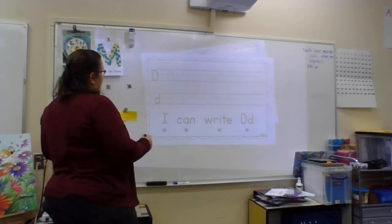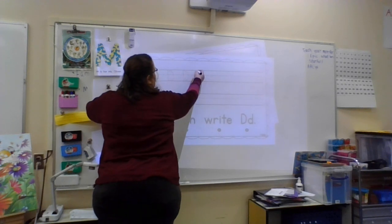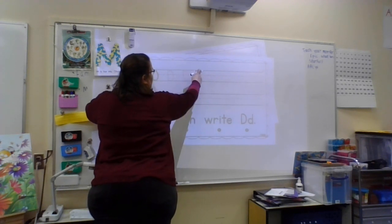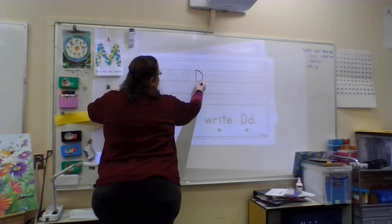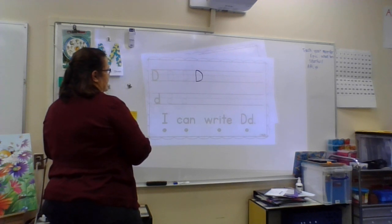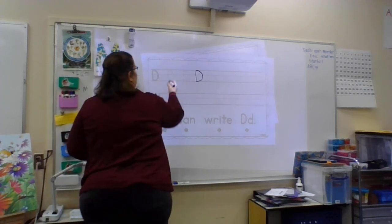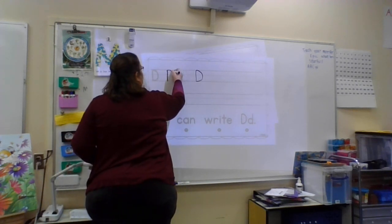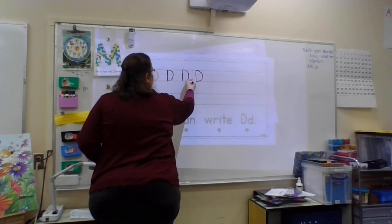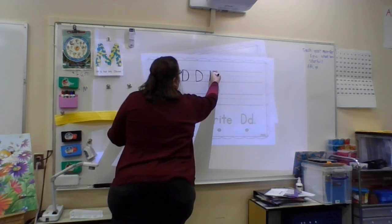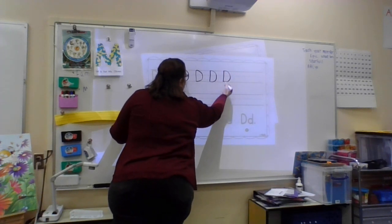The way that you're going to write an uppercase D — do you see how it comes all the way up to the headline, straight line down to the foot line. So that's how I start, and then I pick up because I start at the top, and then I come back up to the top, and I curve out and come back down together with my straight line down at the foot line. Straight line down, curve out, and down.